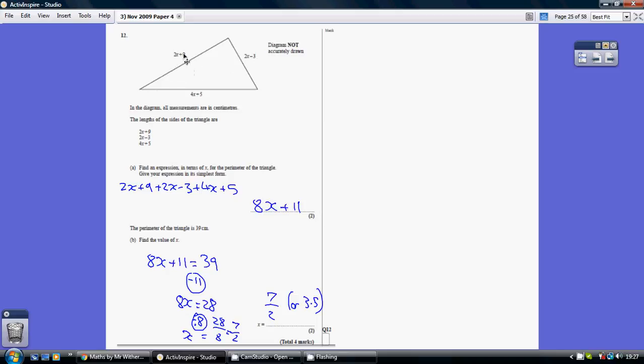So we've got 2x plus 9 added together with 2x minus 3 added together with 4x plus 5. So write that down as you're working and then simplify your expression.